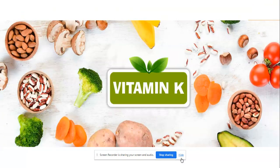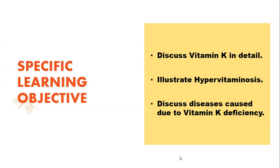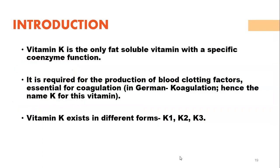Welcome back, dear learners. We are again back to the series on biochemistry vitamins, and our today's topic is Vitamin K. Vitamin K is the only fat-soluble vitamin with a specific coenzyme function — it functions as a coenzyme and is required for the production of blood clotting factors essential for coagulation. In German, coagulation starts with K, hence the name Vitamin K — K for coagulation.